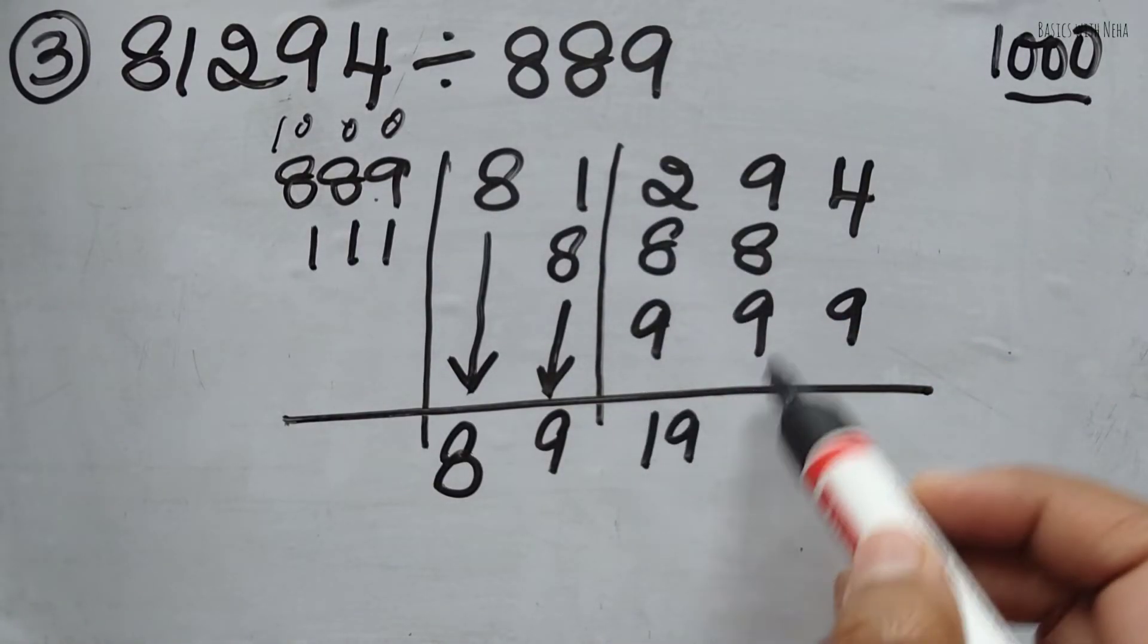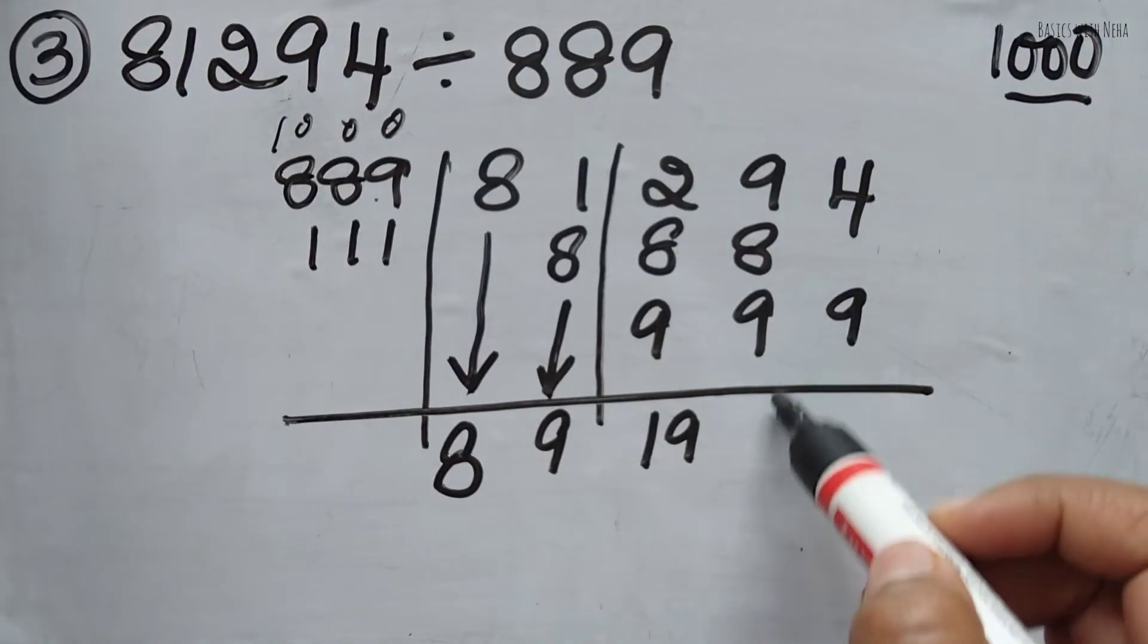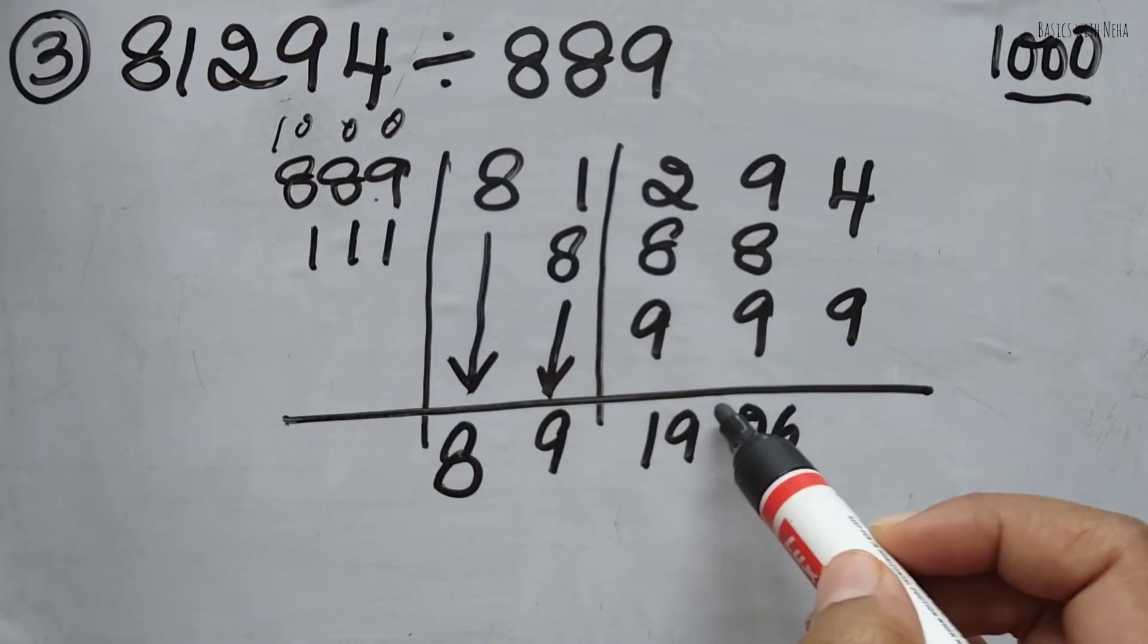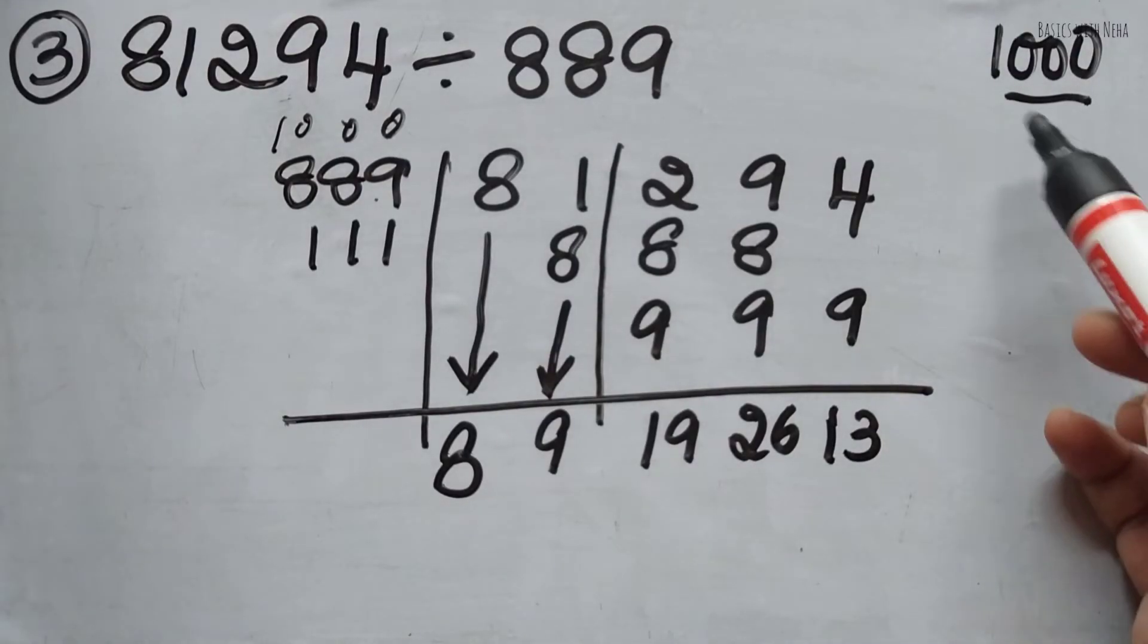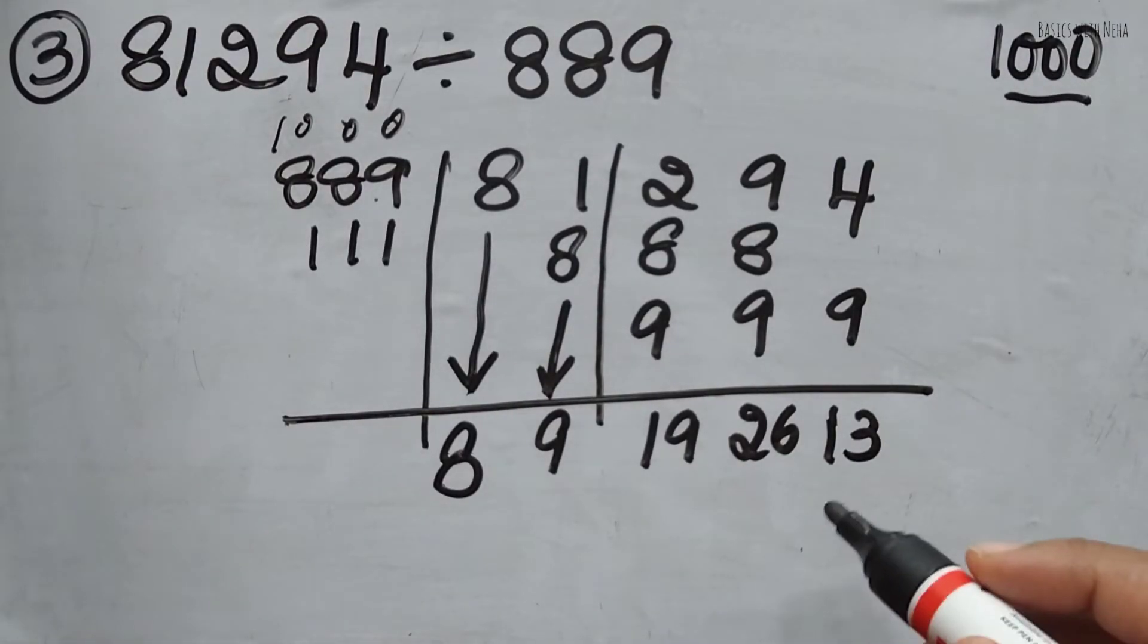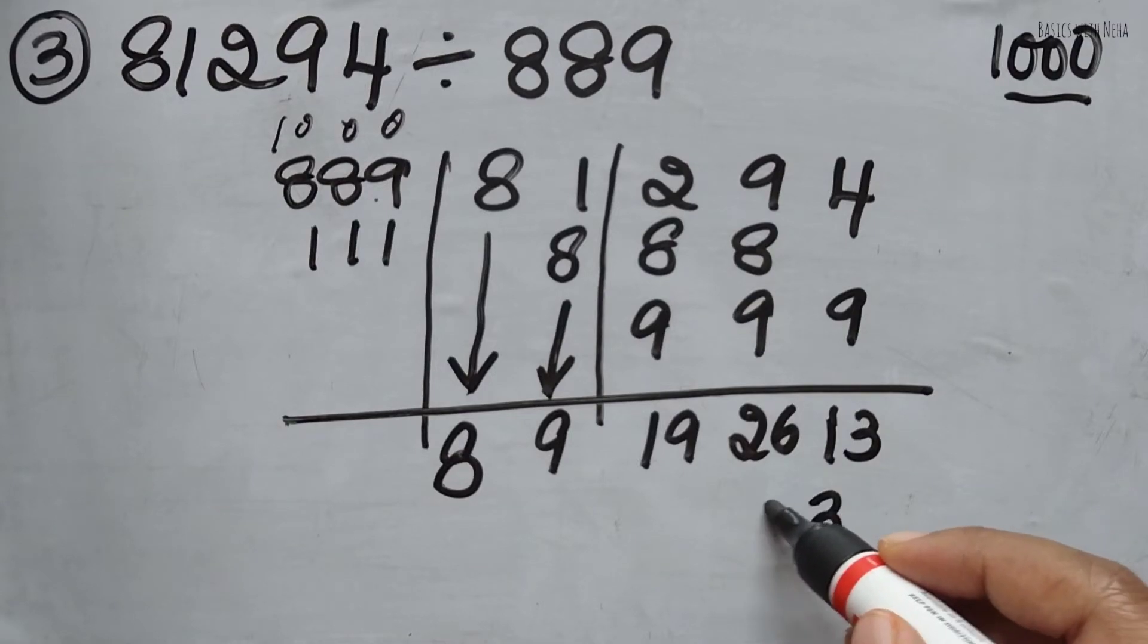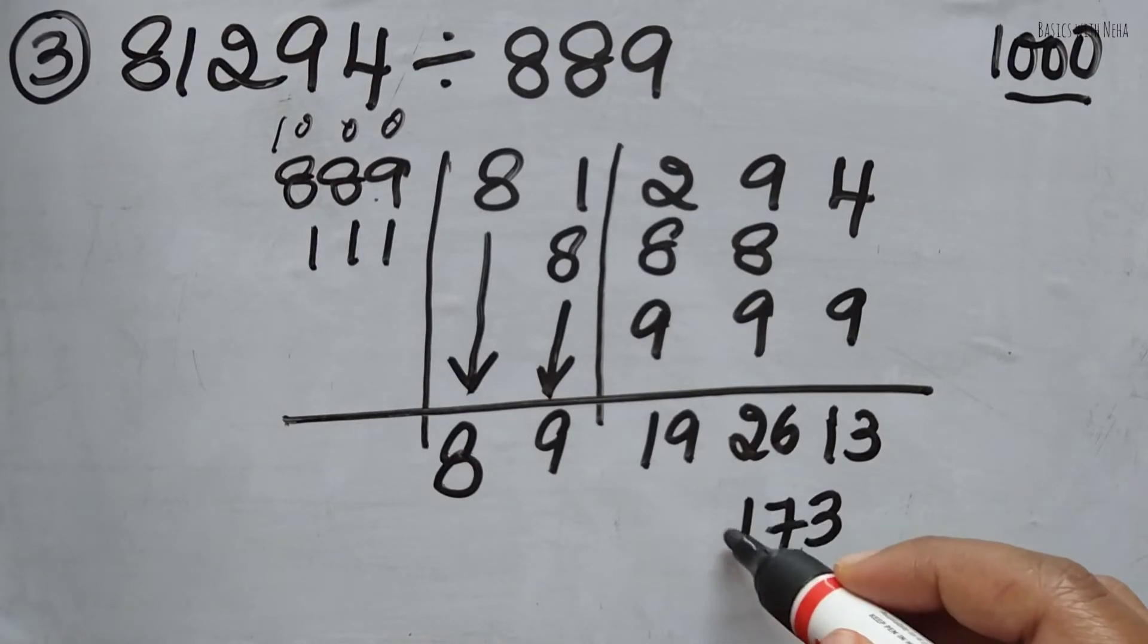So 10 plus 9 is 19. 26, 9, 10, 13. So I should have 3 numbers. That means I'm going to just balance it. 3, 7, 11, 2. So it's 2, 1, 7, 3.